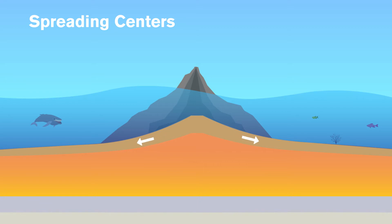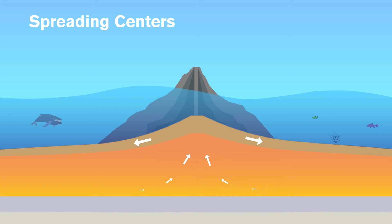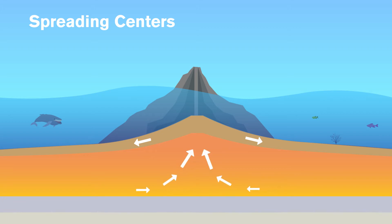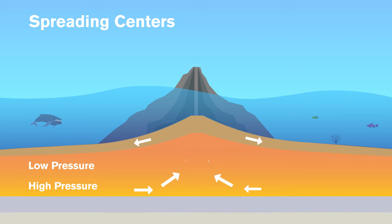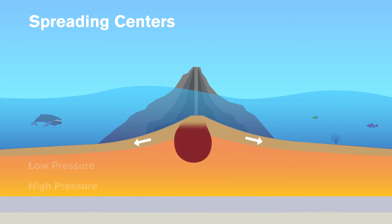This causes an opening, allowing for hot, buoyant mantle material to rise through this new opening. As the mantle material rises, it experiences a pressure reduction, going from a high-pressure mantle to a low-pressure crust. This pressure reduction actually causes the mantle material to melt.